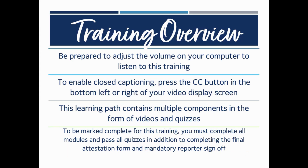Training Overview. Be prepared to adjust the volume on your computer to listen to this training. To enable closed captioning, press the CC button on the bottom left or right of your video display screen. This learning path contains multiple components in the form of videos and quizzes. To be marked complete for this training, you must complete all modules and pass all quizzes in addition to completing the final attestation form and mandatory report or sign off.